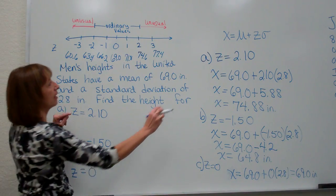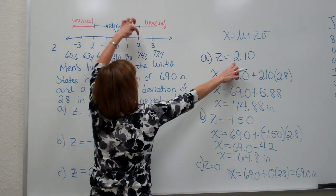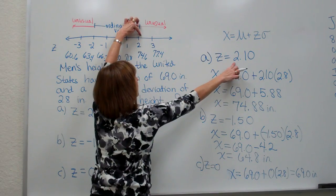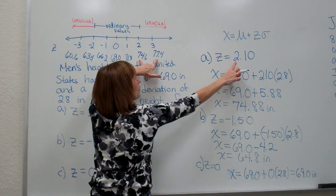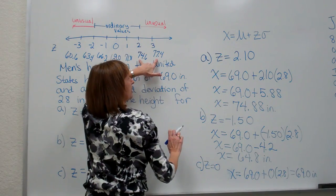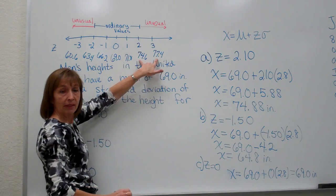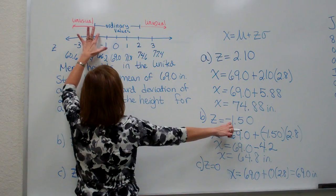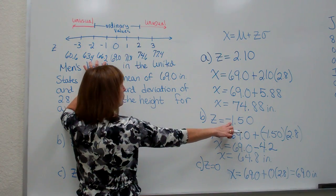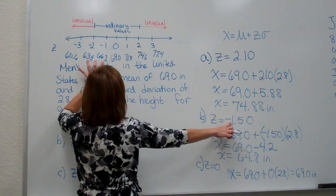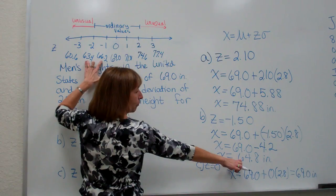And when we look at our z-score 2.1 that we converted to a raw score, 2.1 is bigger than 2 but less than 3, so right in here. So it should have a raw score that's between 74.6 and 77.4 which we got. A negative 1.5 is a z-score that's between negative 1 and negative 2. So the raw score should be somewhere between our 66.2 and our 63.4 and we got 64.8.